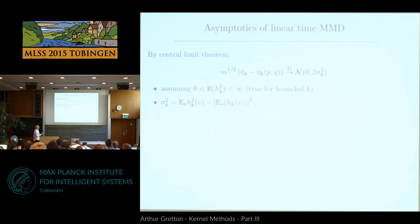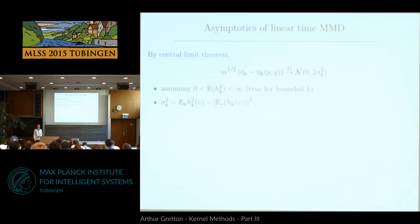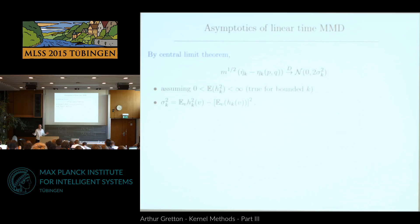Why does this linear time statistic have such a simple distribution? Because it's just the average of M/2 independent terms. By the central limit theorem, this has an asymptotically normal distribution — not an infinite weighted sum of chi-squareds, just a simple normal distribution. I can compute its variance in closed form, at the same cost as the statistic itself. Then I plug it into my Gaussian CDF, get my test threshold, and I'm done.